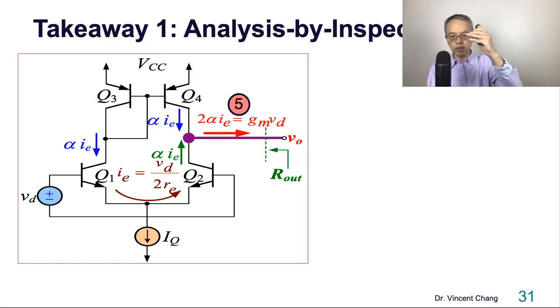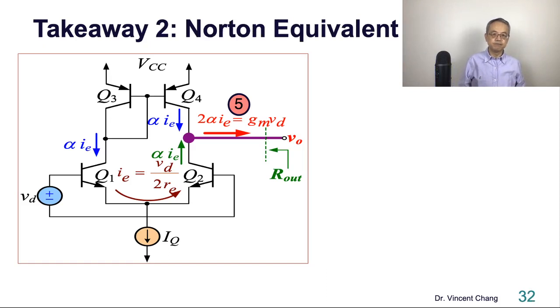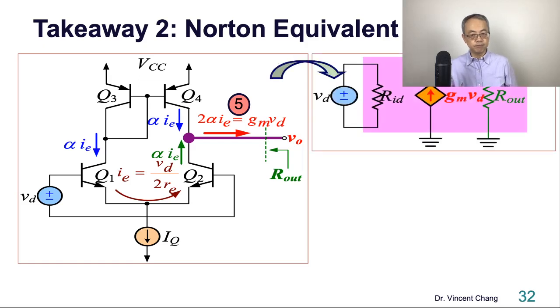Then what? Norton equivalent. The second takeaway: Norton equivalent. We can consolidate the AC analysis into two components from the output, looking from the output. Number one is the voltage control current source, it's the number five current. And then in parallel with the output resistance of the amplifier, which is the parallel combination between R2 and R4.